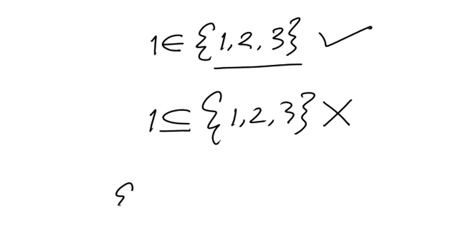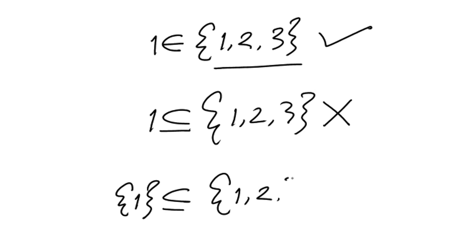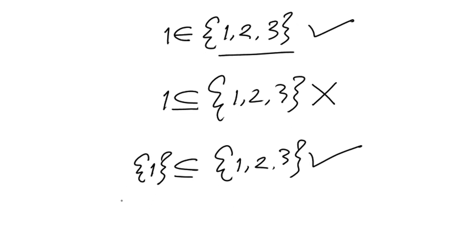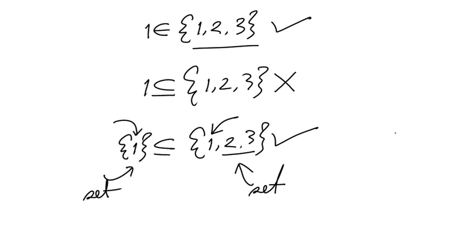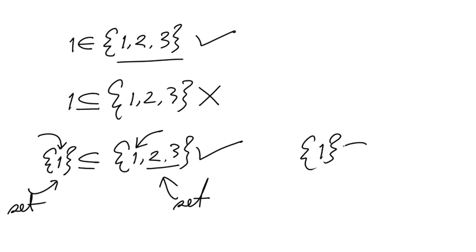However, if we say the set {1} is a subset of {1, 2, 3}, in that case it is correct. Because {1} is a set and {1,2,3} is also a set. The element of {1} is 1, and {1,2,3} also has 1 in it including 2 and 3. That means we can say {1} is a proper subset of {1, 2, 3}. Both are correct.